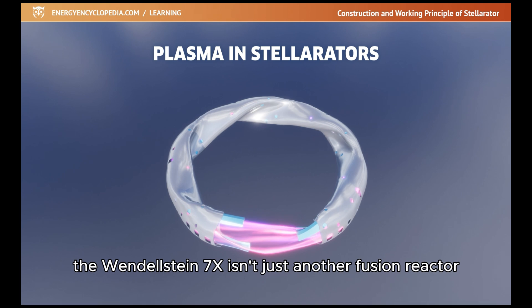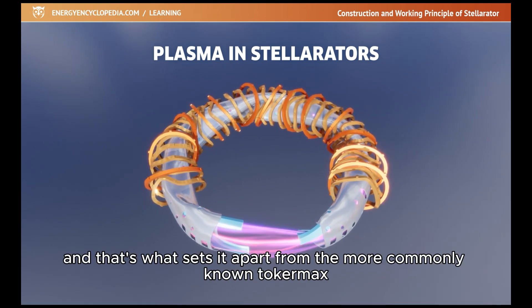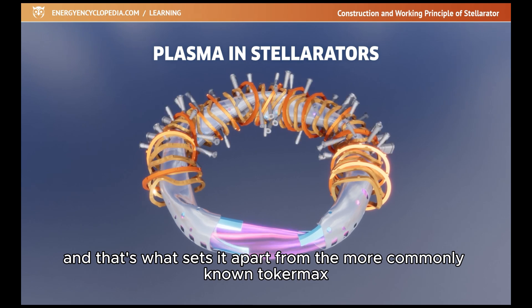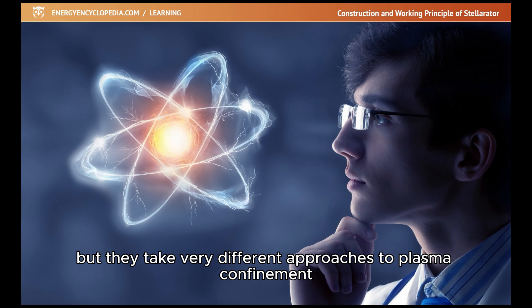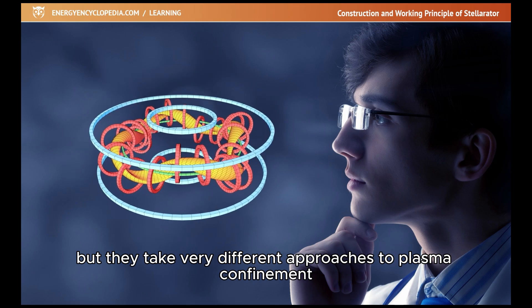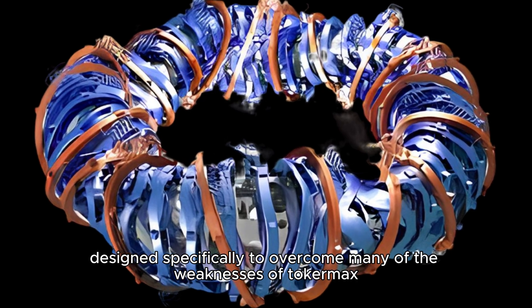The Wendelstein 7X isn't just another fusion reactor, it's a stellarator, and that's what sets it apart from the more commonly known tokamaks. Both devices aim to achieve nuclear fusion, but they take very different approaches to plasma confinement, with stellarators designed specifically to overcome many of the weaknesses of tokamaks.